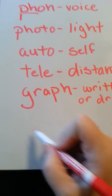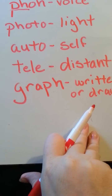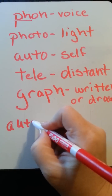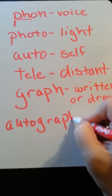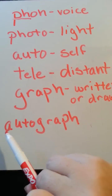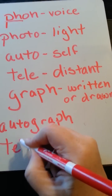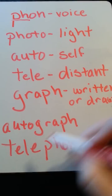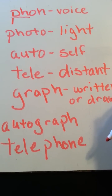I think you can see how these can be combined to create words. For instance, if I write the word autograph, it means self-written, like a signature. Telephone means distant voice, and if you think about a telephone, that's exactly what it does.